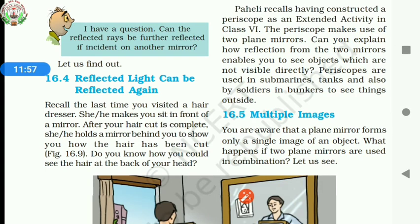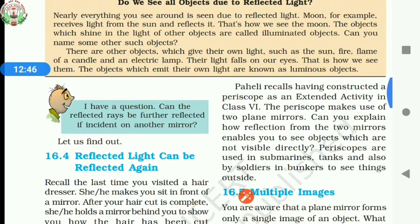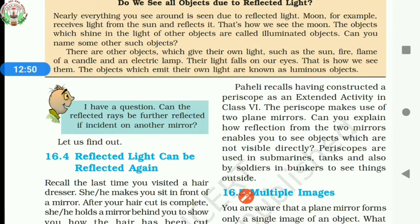Can reflected light be reflected again? Yes, reflected light can be reflected again. For example, just recall the last time you visited a hairdresser. He or she makes you sit in front of a mirror. After your haircut is complete, he or she holds a mirror behind you to show you how the hair has been cut. You could see the hair at the back of your head because of the multiple reflection of light.